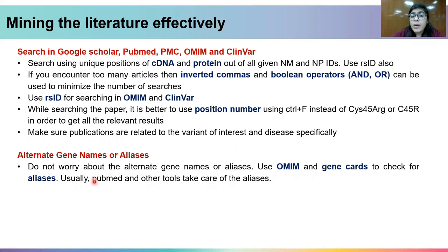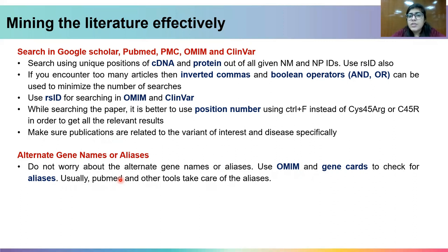If you are searching using one gene name and are unaware that the gene has multiple aliases, you don't need to worry, because PubMed will automatically retrieve results in which other aliases have been used.